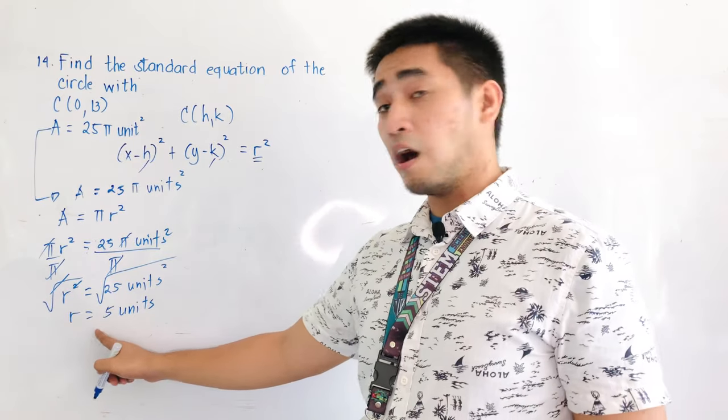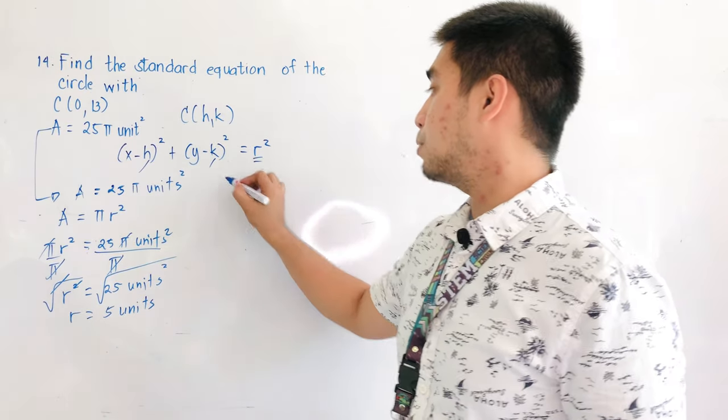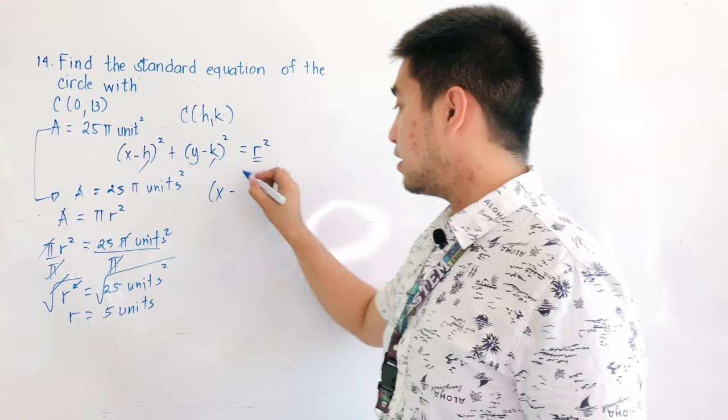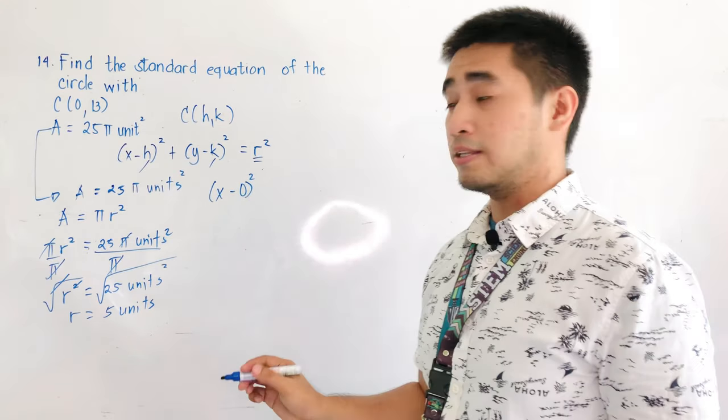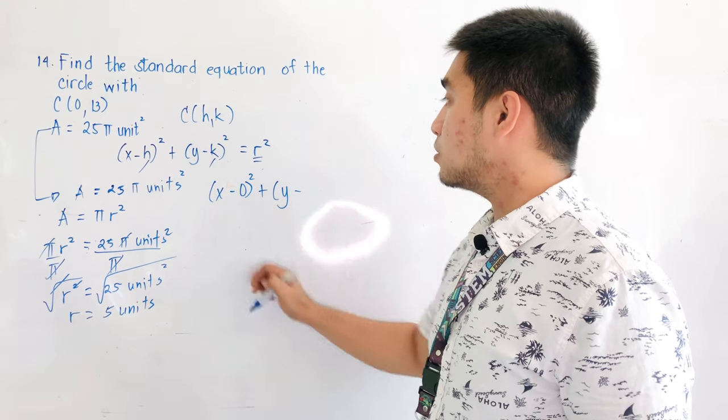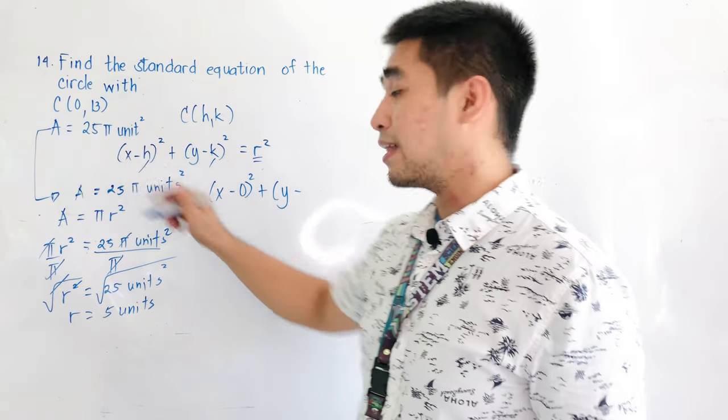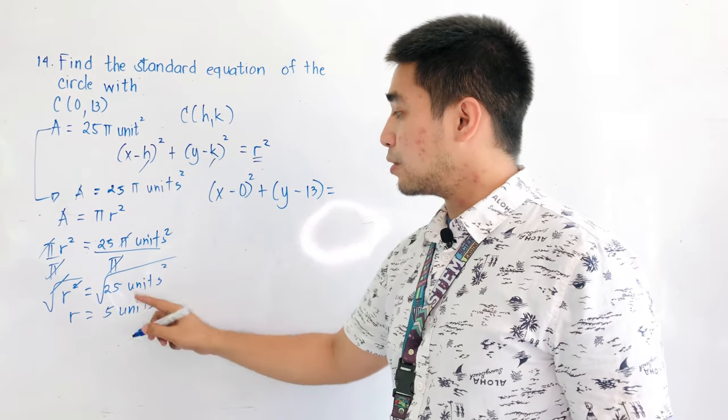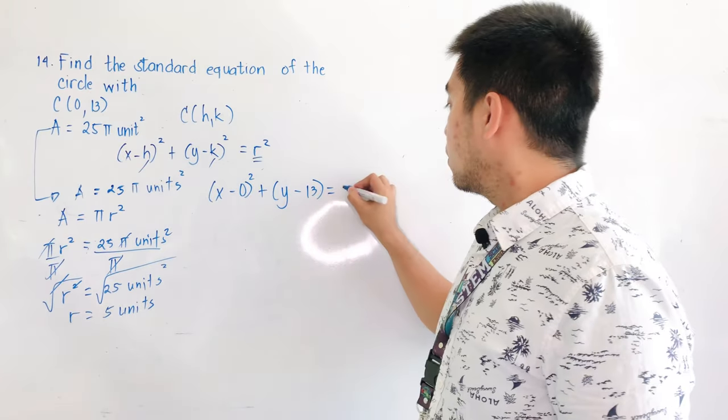so we're now ready to substitute r to the equation. We will be having x minus, what is the value of h? That is 0. x minus 0, quantity squared, plus y minus k. What is the value of k? That is 13. Is equal to r squared. Our r squared is 5 squared.